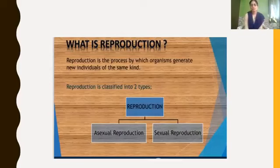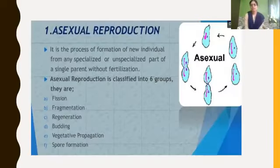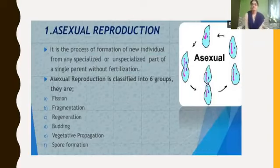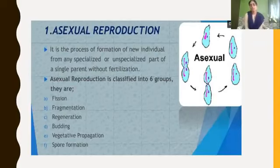Let's look at asexual reproduction first. Asexual reproduction is a process of formation of new individuals from any specialized or unspecialized part of a single parent without fertilization. It involves only a single parent. Asexual reproduction is classified into six types: fission, fragmentation, regeneration, budding, vegetative propagation, and spore formation. Some of these types occur in animals and some occur in plants.